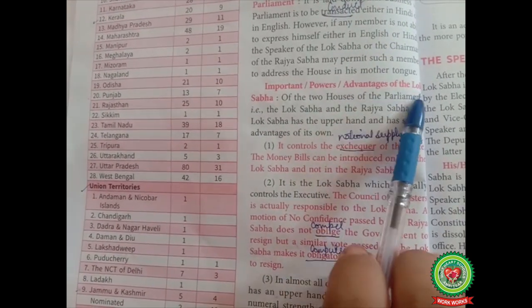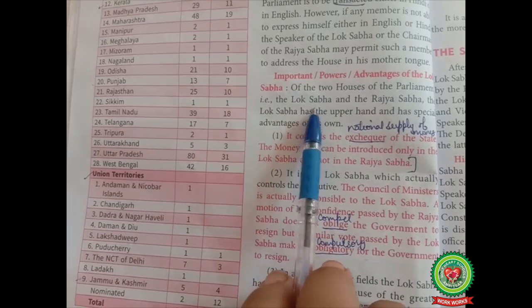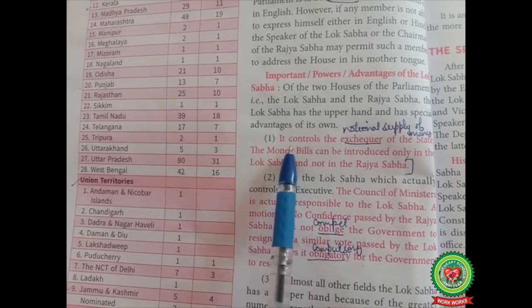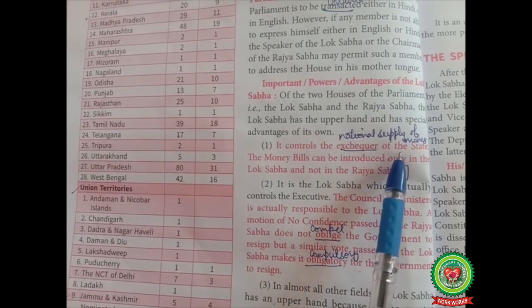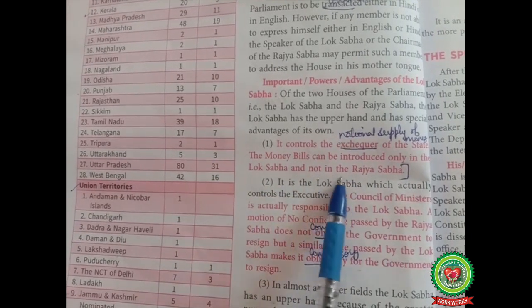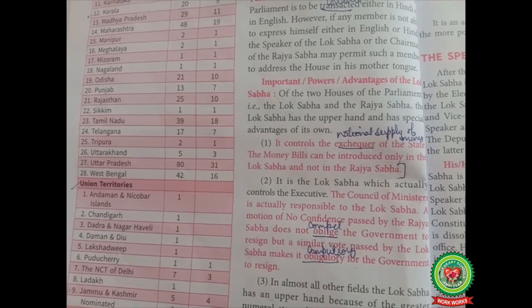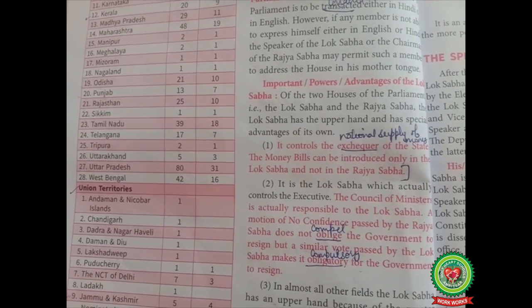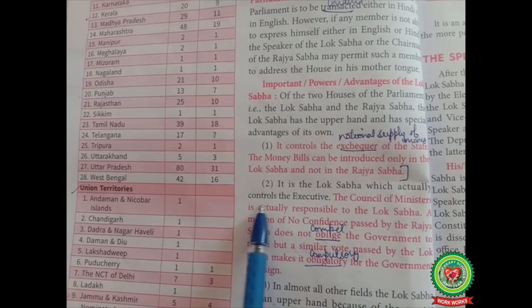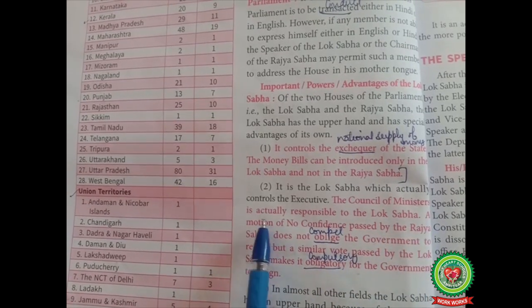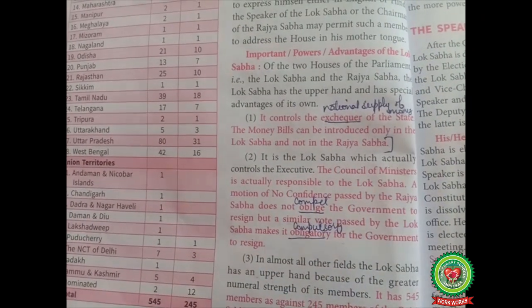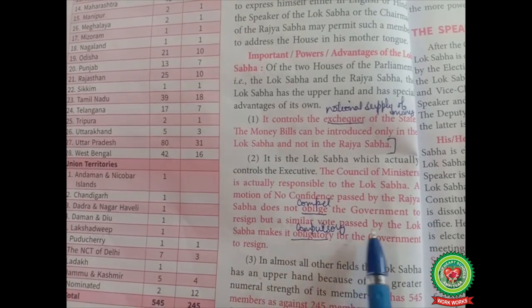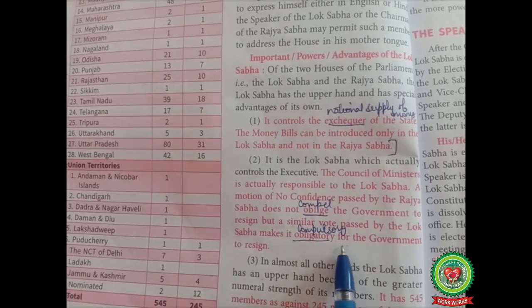Important powers and advantages of Lok Sabha. Of the two houses of parliament — the Lok Sabha and the Rajya Sabha — the Lok Sabha has the upper hand. First, it controls the exchequer (national supply of money of the state). Money bills can be introduced only in the Lok Sabha and not in the Rajya Sabha. Second, it is the Lok Sabha which actually controls the executive. The council of ministers is responsible to the Lok Sabha. A motion of no confidence passed by the Rajya Sabha does not oblige (compel) the government to resign, but a similar vote passed by the Lok Sabha makes it obligatory for the government to resign.